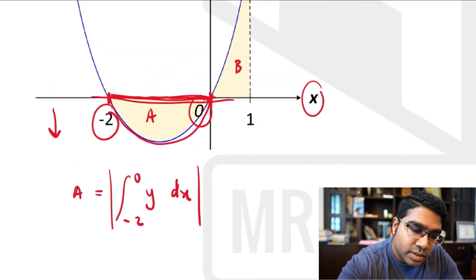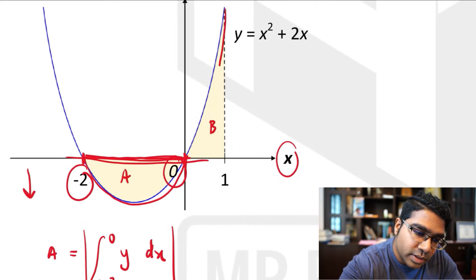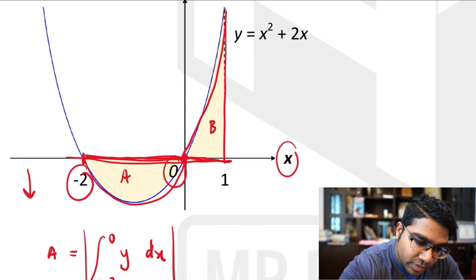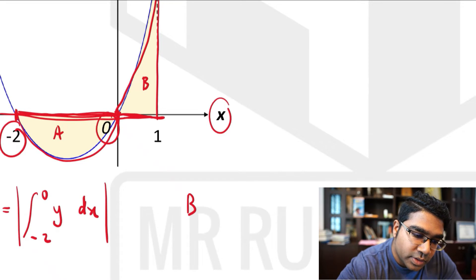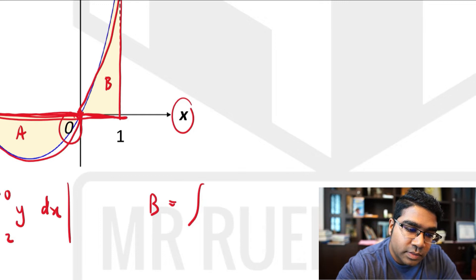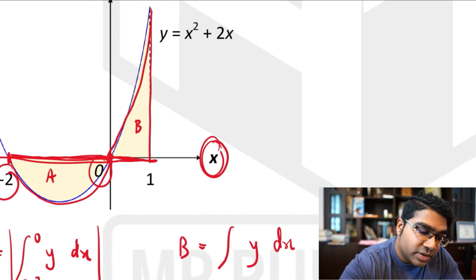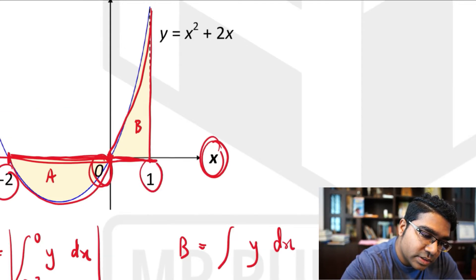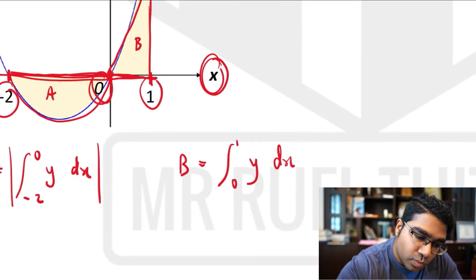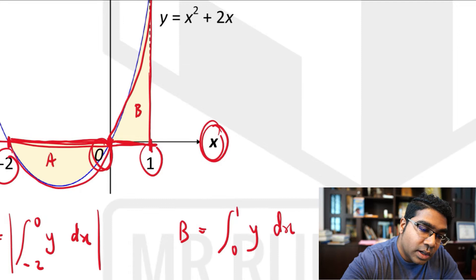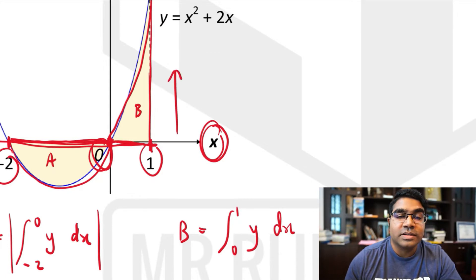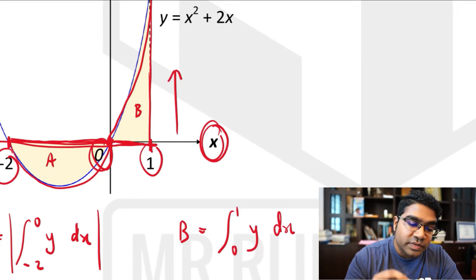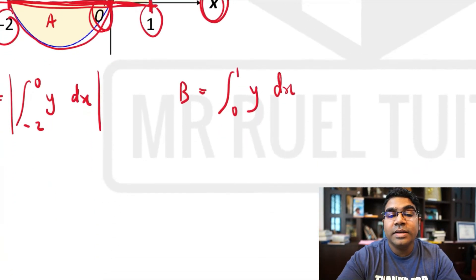Let's look at B. B is bounded by the curve and the x-axis, as well as this line. Since one of the boundaries is the x-axis, for B we are going to integrate with respect to x — that is, we integrate y dx. The limits of integration are 0 to 1. B is above the x-axis, therefore its value will be positive, and there is no need for modulus.